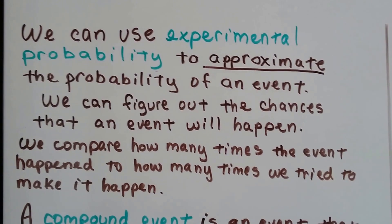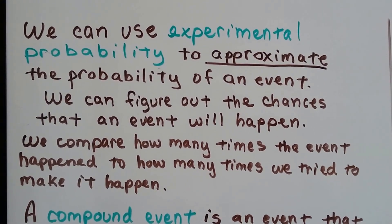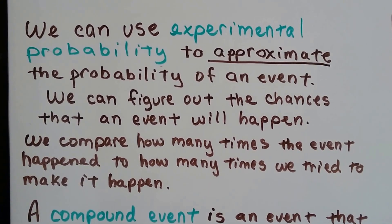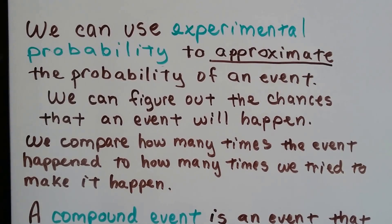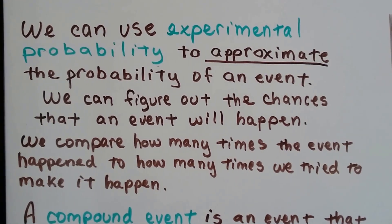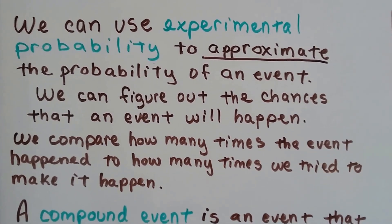We can use experimental probability to approximate the probability of an event. We can figure out the chances that an event will happen. We compare how many times the event happened to how many times we tried to make it happen.